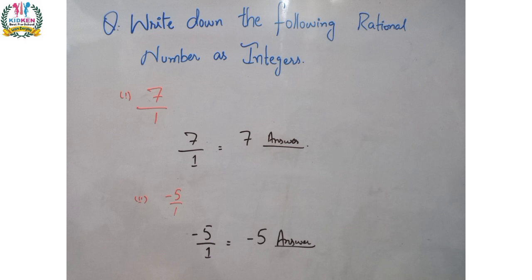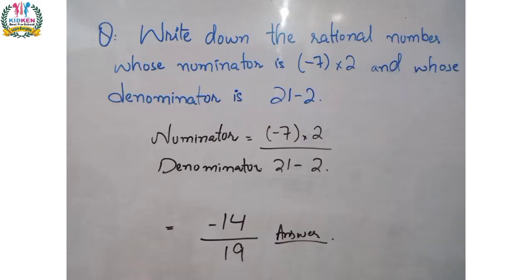The next question is: write down the Rational Number whose numerator is minus 7 multiplied by 2 and whose denominator is 21 minus 2. Simply write the numerator value as minus 7 multiplied by 2, and the denominator as 21 minus 2, then simplify. Minus 7 multiplied by 2 gives minus 14, and 21 minus 2 gives 19. So the final solution is minus 14 upon 19.